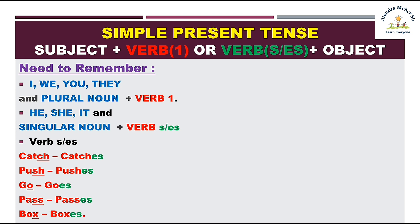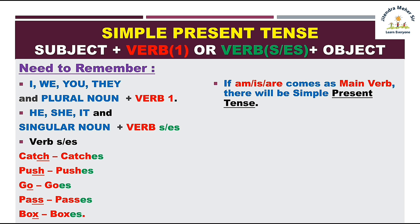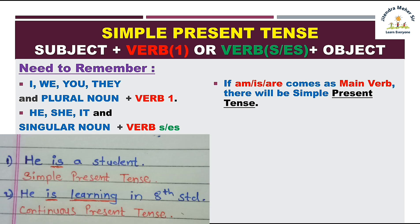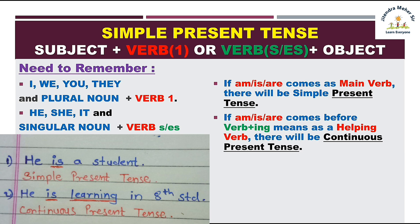Aur kuch aur cheezein yaad rakhni hain. Agar sentence mein am, is, ya are as a main verb aaye — matlab sirf single aaye, iske saath koi aur verb na aaye — toh samajh lena wahan simple present tense hai. Lekin agar am, is, are ke saath verb+ing aaye, matlab wahan yeh helping verb ke taur par use hue hain, toh wahan continuous present tense hai, na ki simple present.